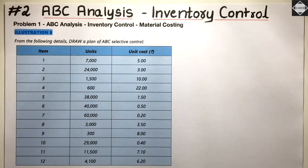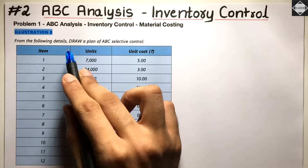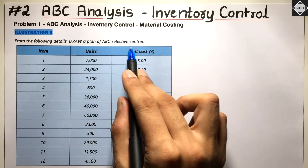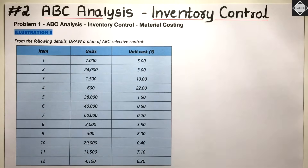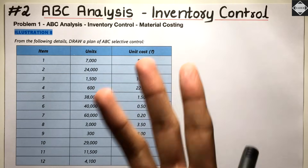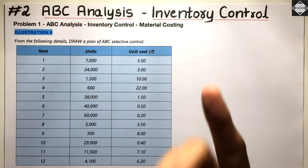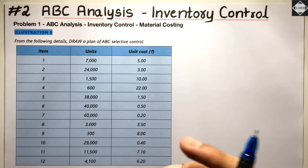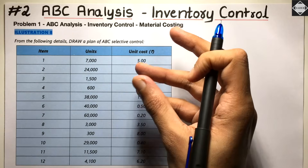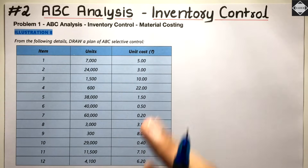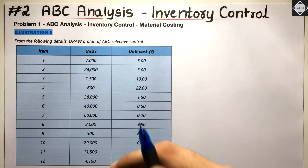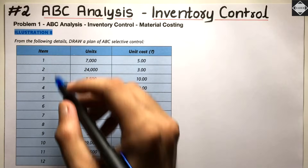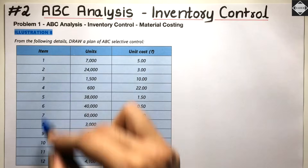Let's read the question: 'From the following details, draw a plan of ABC selective control.' ABC analysis is selective control — we categorize inventory into three different categories and place selective controls. In category A we place tight controls, in category B medium controls, and in category C basic controls.